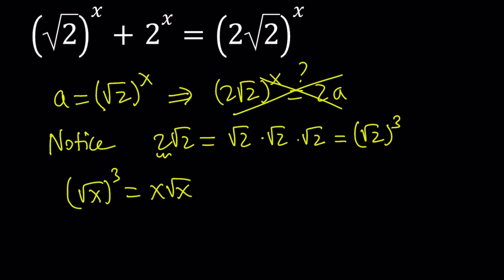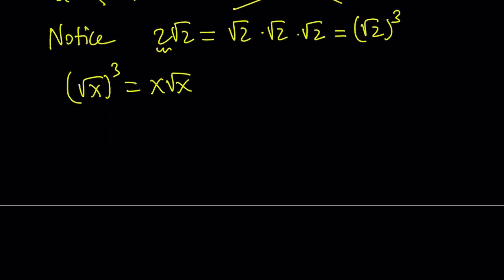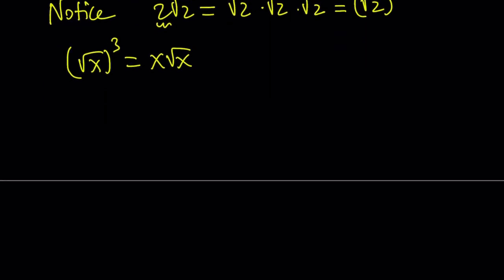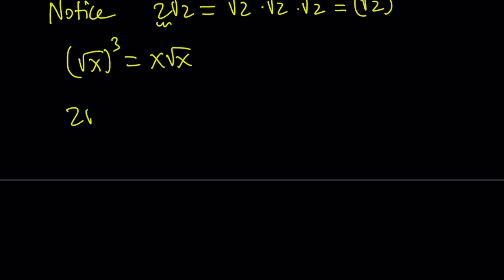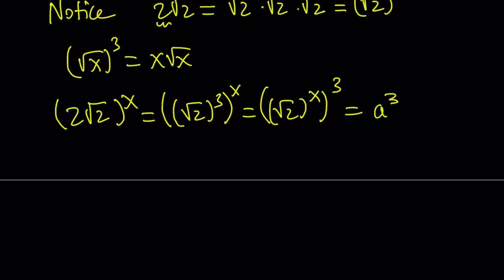Now, let's go ahead and substitute everything into the original equation. But first of all, let's simplify this a little bit. 2 times the square root of 2 to the power x can be written as square root of 2 to the third to the power x. And then the 3 and the x can be switched around. And we can write this as square root of 2 to the x to the power 3. And since square root of 2 to the power x is a, this becomes a cubed.